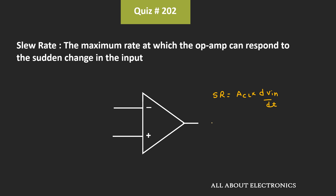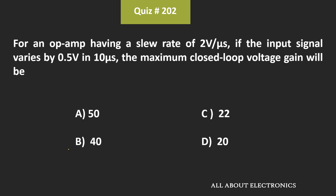The slew rate is 2V per microsecond, and the rate of change of input voltage is 0.05V per microsecond. That means the maximum closed-loop gain of the op-amp is equal to 2V divided by 0.05V, which is equal to 40. So for the given question, the maximum possible closed-loop voltage gain is 40, meaning B is the correct answer.